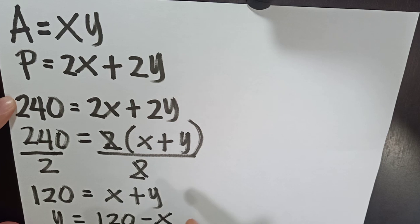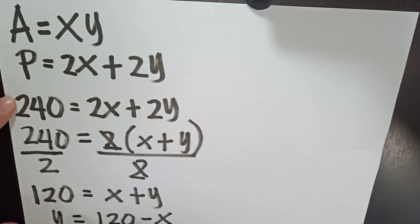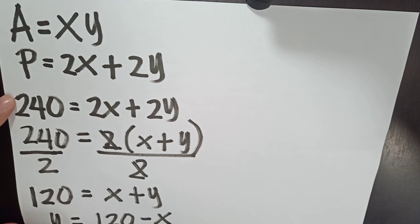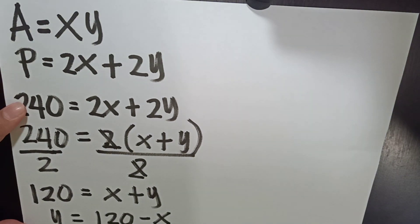How does it happen? We just move or transpose x to the other side. By commutative property, we have now y is equal to 120 minus x.